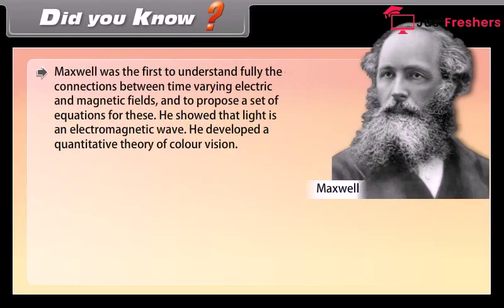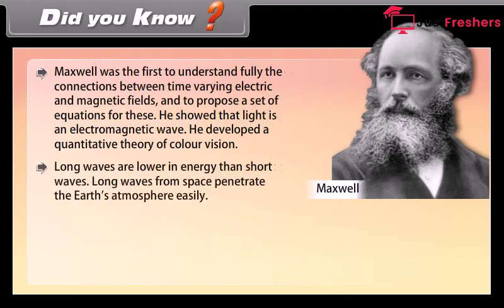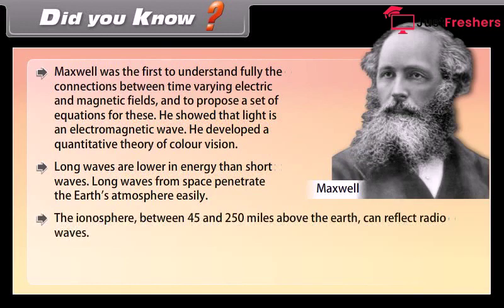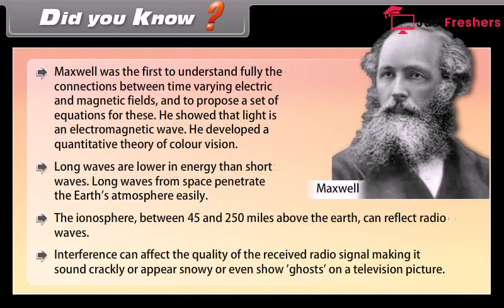Did you know? Maxwell was the first to fully understand the connections between time-varying electric and magnetic fields. He showed that light is an electromagnetic wave and developed a quantitative theory of color vision. Long waves are lower in energy than short waves, and long waves from space penetrate the Earth's atmosphere easily. The ionosphere, between 45 and 250 miles above the Earth, can reflect radio waves. Interference can affect the quality of a received radio signal, making it sound crackly or appear snowy on a television picture.